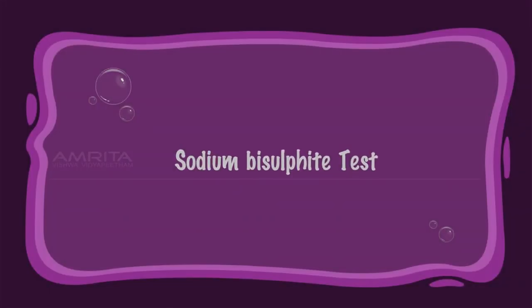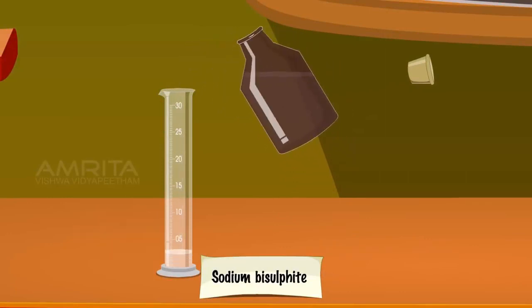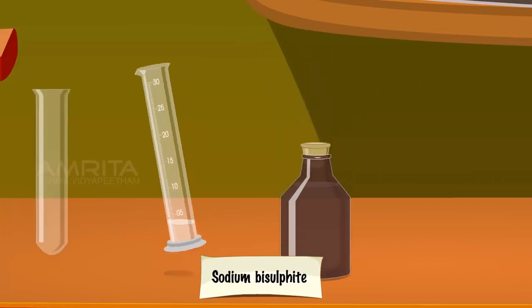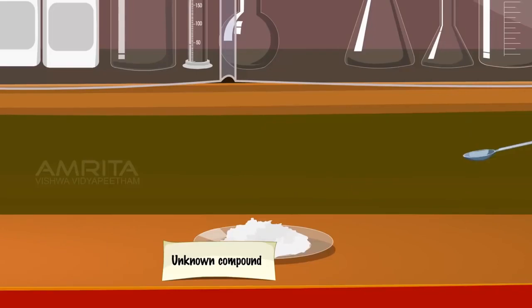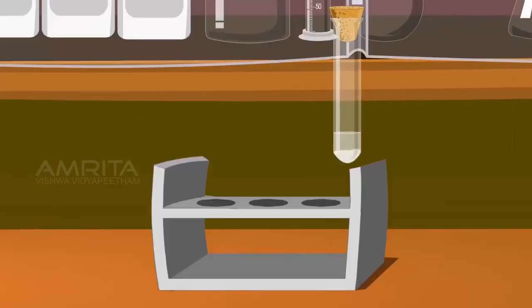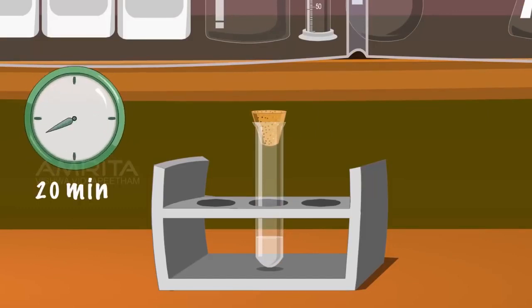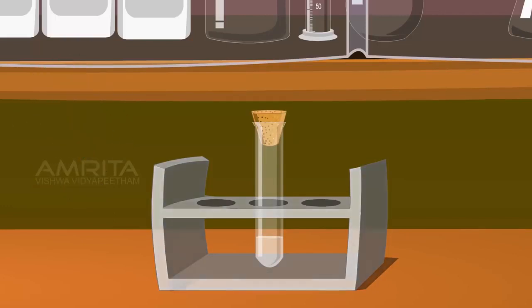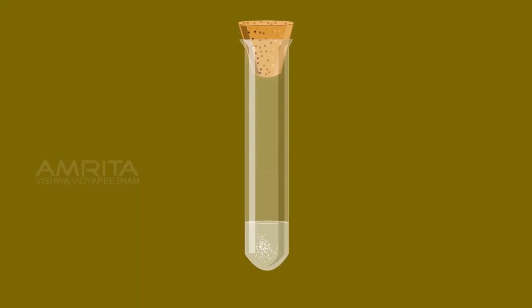Sodium bisulphite test. Procedure: Take 2 ml of sodium bisulphite in a measuring jar and pour it into a dry test tube. Add some unknown compound to it with a spatula. Cork the test tube, shake it, and allow it to stand for 20 minutes. Formation of a crystalline white precipitate confirms the presence of a carbonyl group.